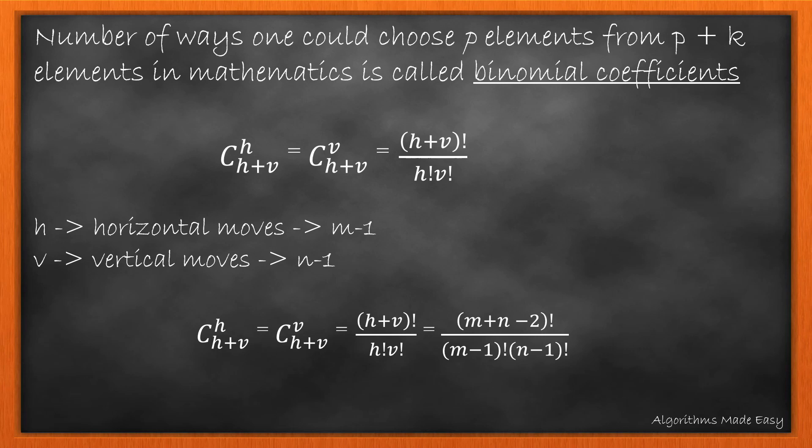If we see it mathematically, the number of ways one could choose p elements from a p plus k element set is called the binomial coefficient. So the number of ways one could move horizontally given horizontal plus vertical total values, or vice versa, will be (h + v)! divided by h! into v!, where h and v are the maximum horizontal and vertical moves possible. If we substitute this with the parameters from the question, we can have m minus 1 horizontal moves and n minus 1 vertical moves, so the equation changes accordingly.